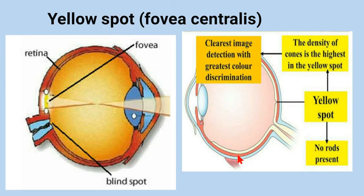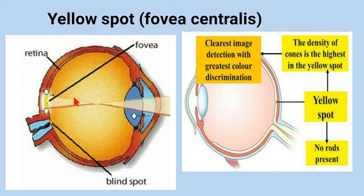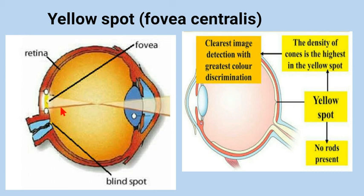Now let's discuss the retina. The retina contains photoreceptor cells — rods and cones. The yellow spot, called the fovea centralis, contains a very dense concentration of cones. If we are able to see different colors and fine details — 20/20 vision — it is because of the yellow spot or fovea centralis. The macula is the surrounding area, and the center of the macula is the fovea centralis. Cones are present in large quantities there and help us see different colors.